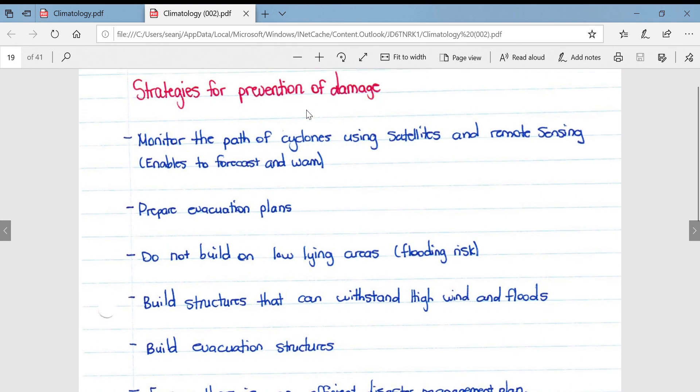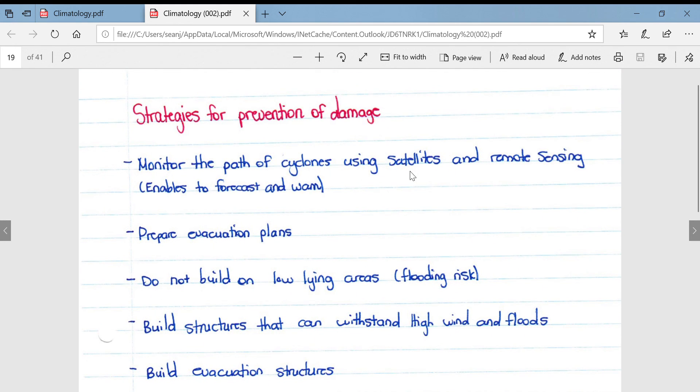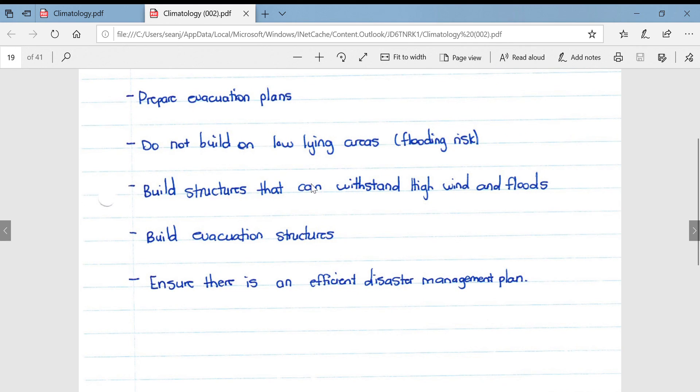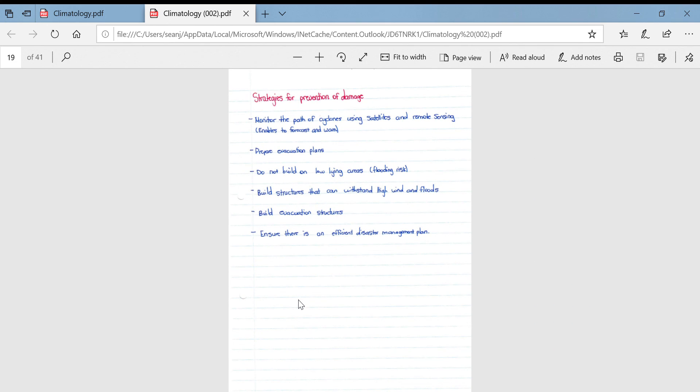Just lastly, I want to go into some strategies for the prevention of damage. We can monitor the path of cyclones using satellites and remote sensing. This enables us to forecast when they're going to hit land as well as warn populations. We can prepare evacuation plans. We mustn't build on low areas because they are obviously at a huge flooding risk. We can build structures that can withstand high winds and floods. We must build evacuation structures which are ready before the cyclone arrives, and we must ensure that there's an efficient disaster management plan in place well before the tropical cyclone arrives.